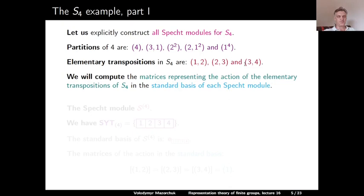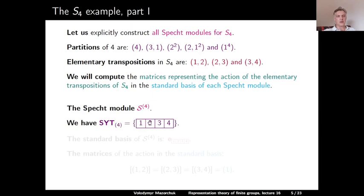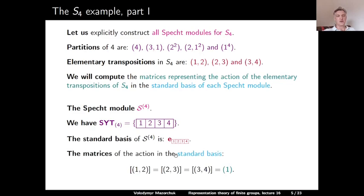The Specht module S^4 is isomorphic to the trivial S_n module. We have one standard Young tableau for partition 4, namely the single row with elements 1, 2, 3, 4 in natural order. The standard basis of S^4 consists of the polytabloid for this unique standard Young tableau. The matrix of the action of any element in S4, and in particular all elementary transpositions, is just the 1×1 identity matrix, since this is the trivial module.